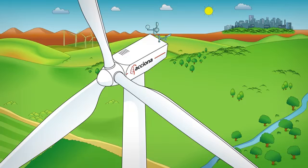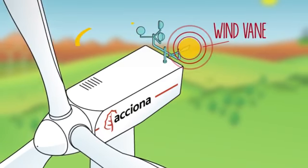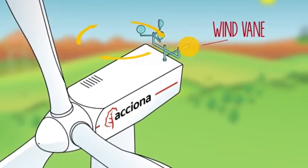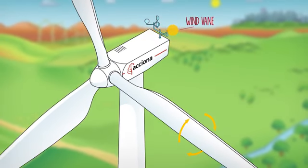Each wind turbine has a wind vane at the top that indicates the wind direction. This allows the turbine to rotate on the tower and face the wind. The blades also rotate on their axis for maximum resistance.